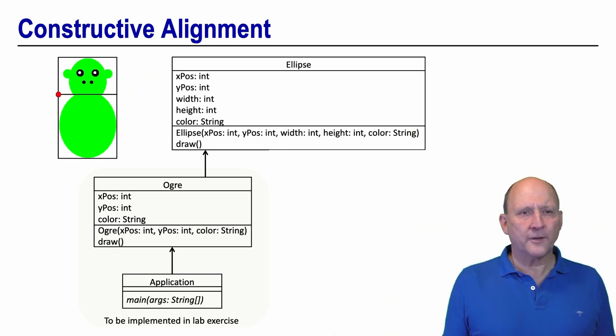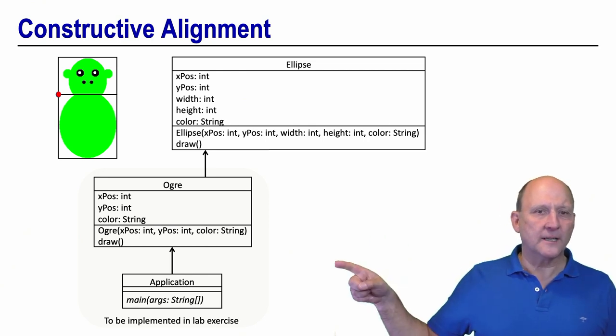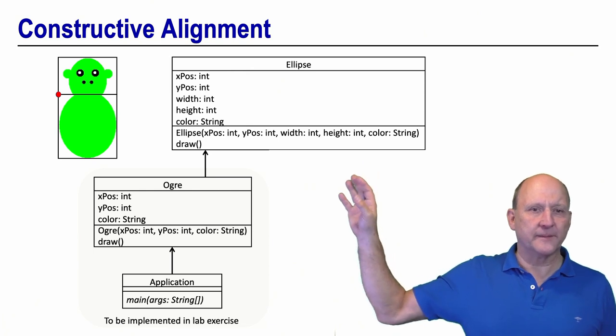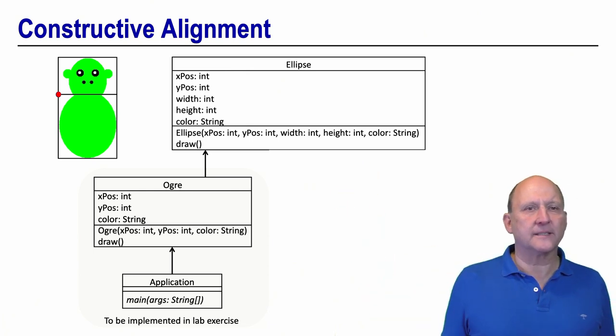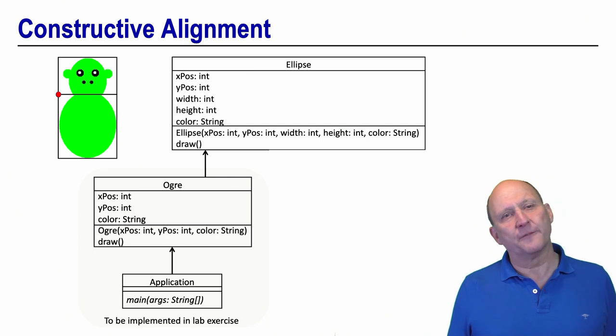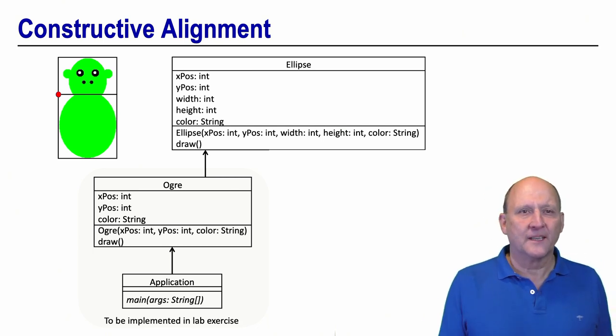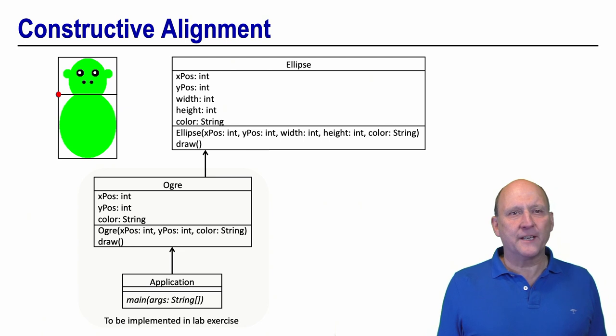For one of the first lab sessions we created an exercise that guides students through a process where they create a class ogre based on a given class ellipse. So they create this class ogre representing pictures, figures, something like Shrek, and these figures can be drawn on a canvas using the ellipse class. Thus our students have immediate visual feedback.